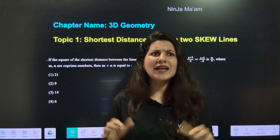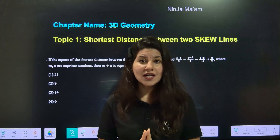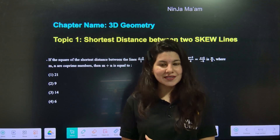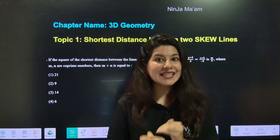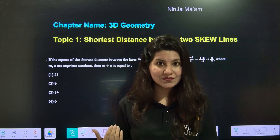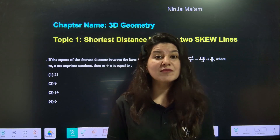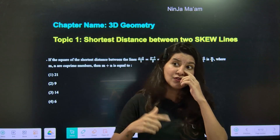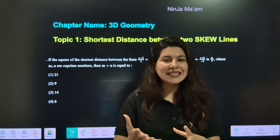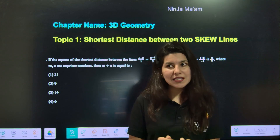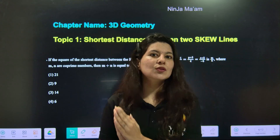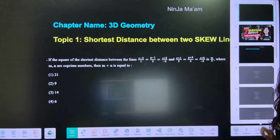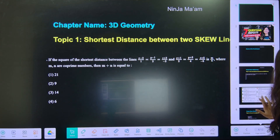If you go by the normal general method, you will spend almost 2 to 3 minutes on this. But if you use the Ninja style for this question — I have made a short video on these types of questions — with the Ninja technique, the question becomes much easier and you would be able to solve it within 1 minute. This is topic number 1, and a short question is going to be there.